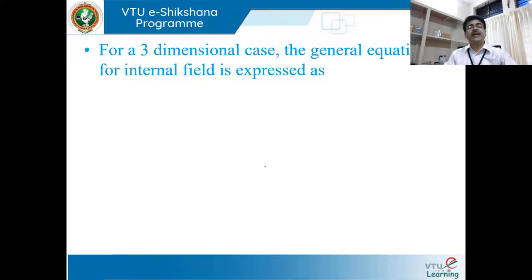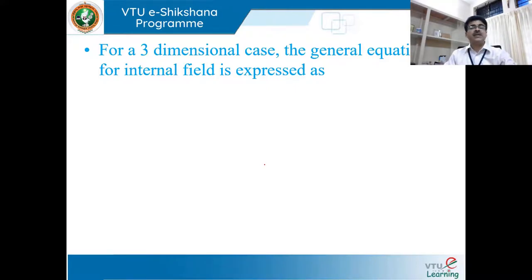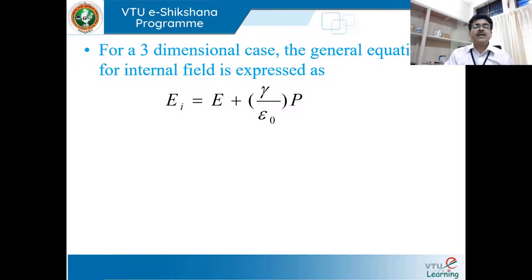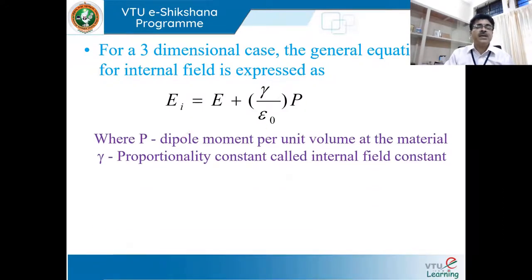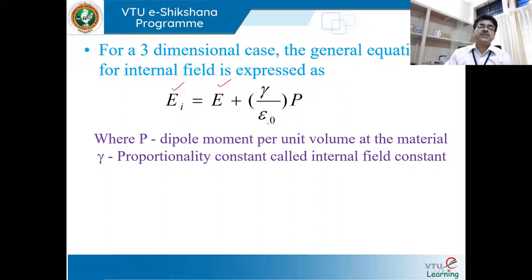Now let us extend this to the three-dimensional case. The equation derived was for one dimension. Extended to 3D, the general equation for the internal field is EI = E + (γ/ε₀)P, where P is the dipole moment per unit volume — the polarization — and γ is the proportionality constant called the internal field constant. E is the applied electric field and EI is the total internal electric field.